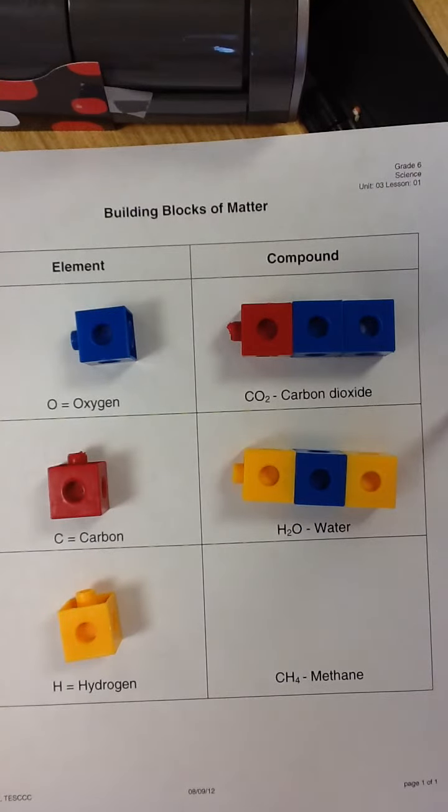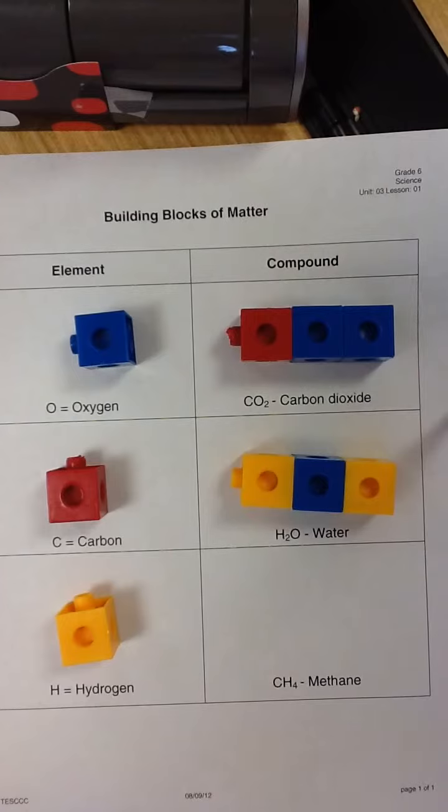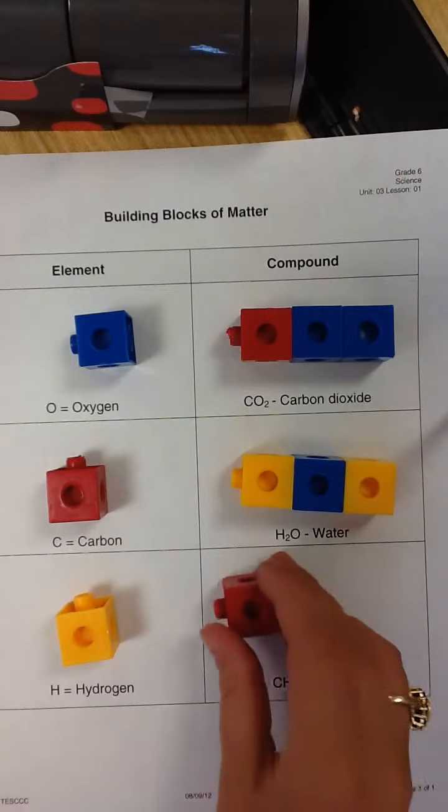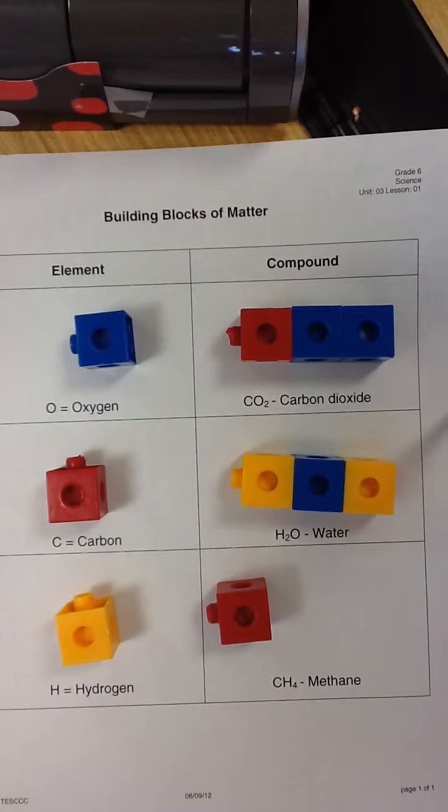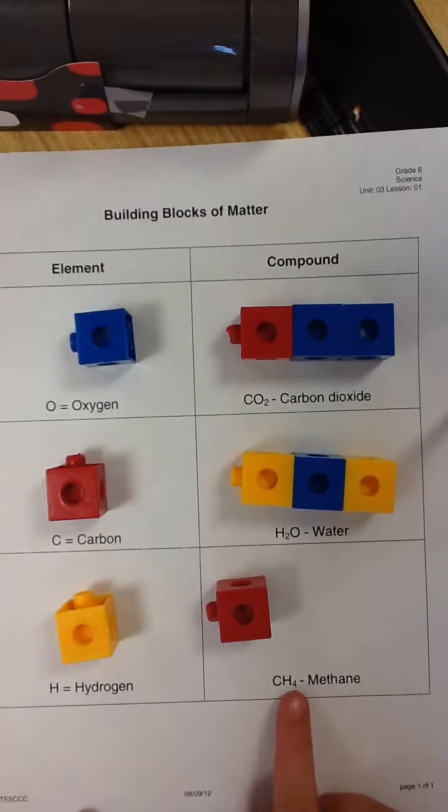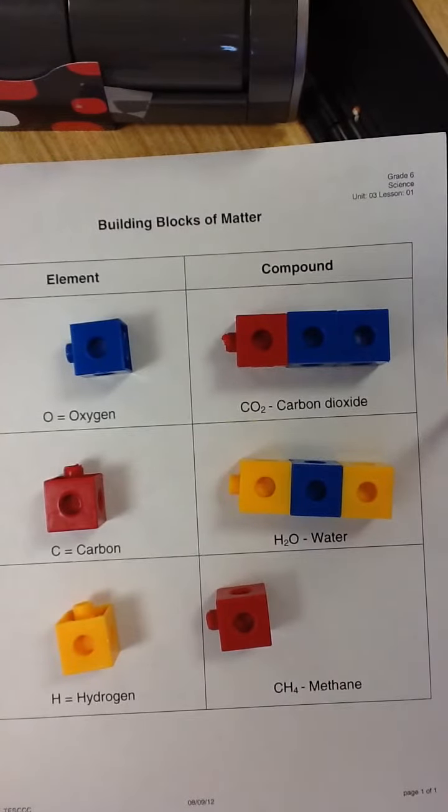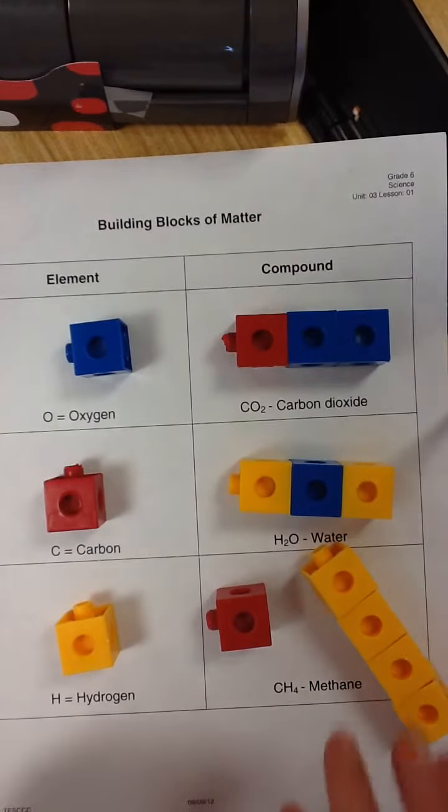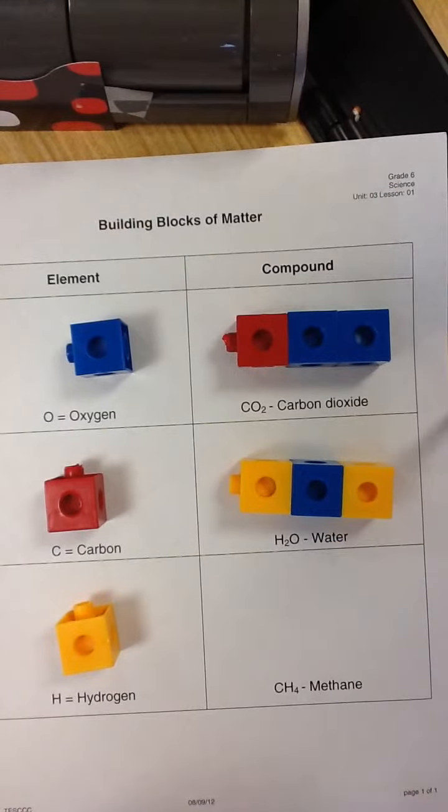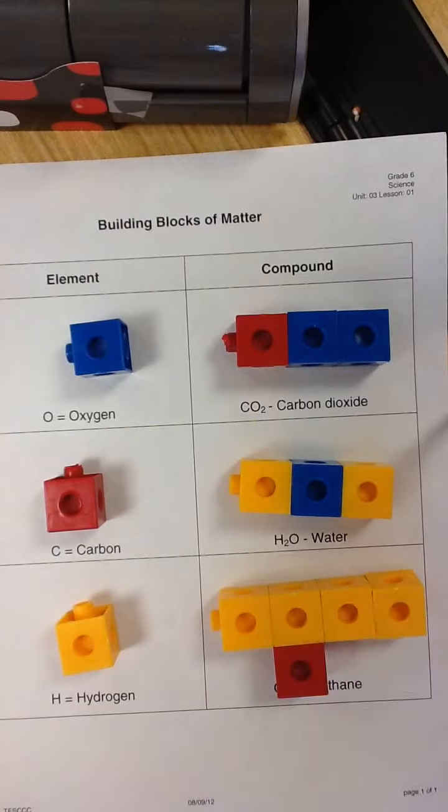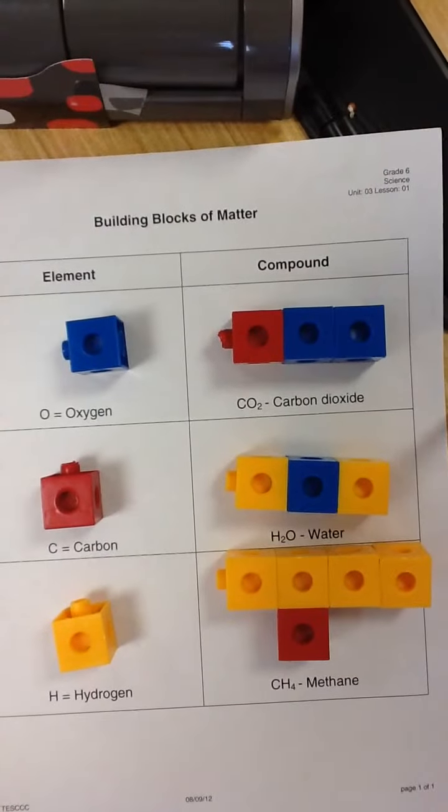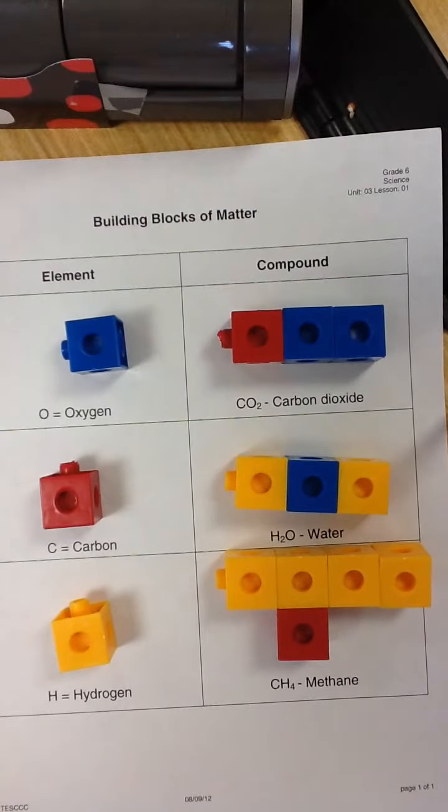All right, for methane, as you can see, it's going to be one carbon. So carbon that's represented here is one carbon. Then it's going to be four hydrogens. I can tell because there's a four behind the hydrogen here. So I'm going to put them together. Are they a compound right now? No, this is a mixture. They need to be chemically combined. So I'm just going to be funky with this one, kind of make it silly. There we go. I have chemically combined them. So now they make up the formula CH4, which is methane.